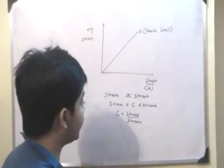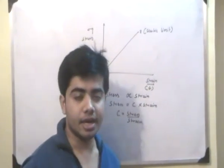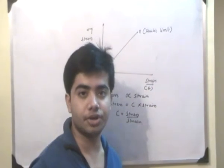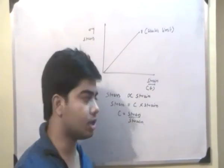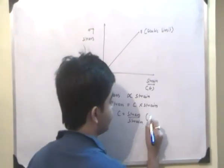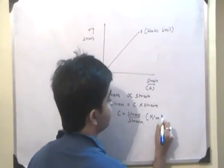So C, basically the modulus of elasticity, is the amount of stress required to produce one unit of strain. This C has the same unit of stress because strain as we know has no units. So basically C is equal to Newton per meter squared.